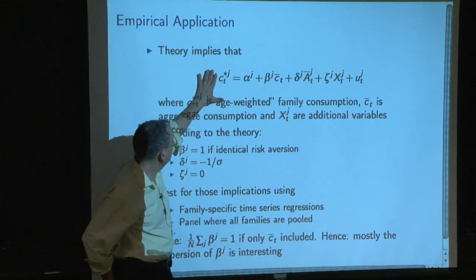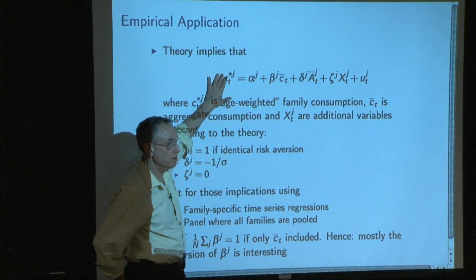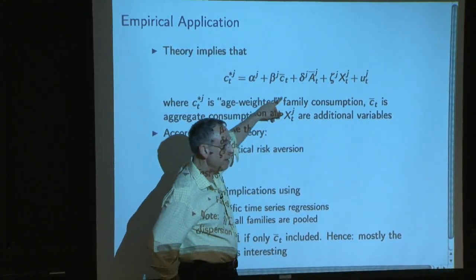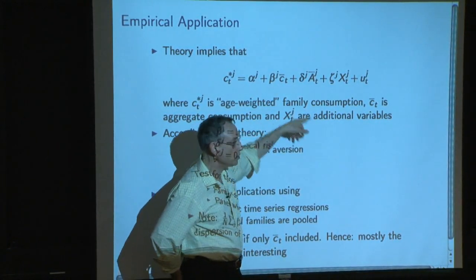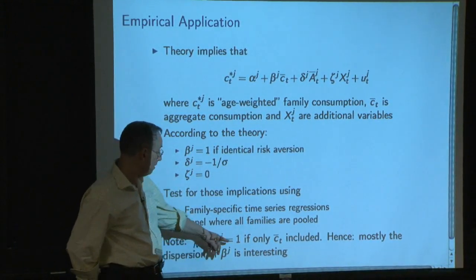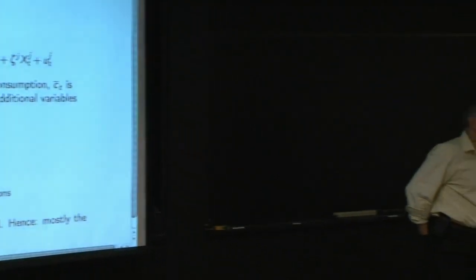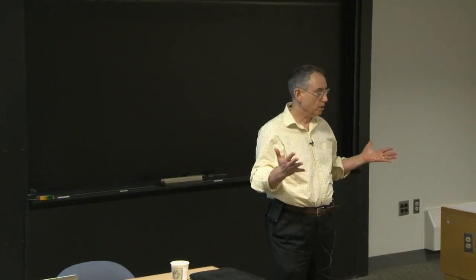You're going to have a devil of a time running this. Even when you run one household at a time — using the leave-out mean so the household is not included — it turns out, amazingly enough, that these coefficients, one for each household, when you average them up, have to take on the value of one. There are econometric issues where you could mistakenly think you've got a lot of co-movement and it's just going to happen mechanically.